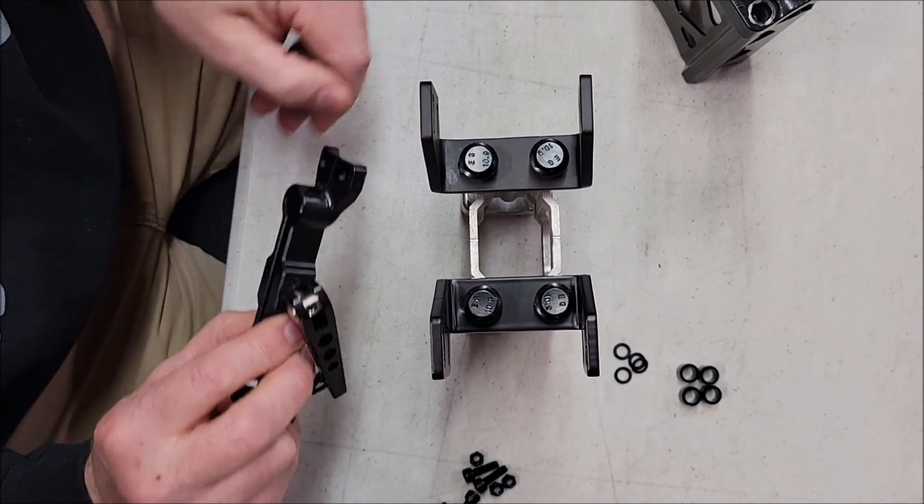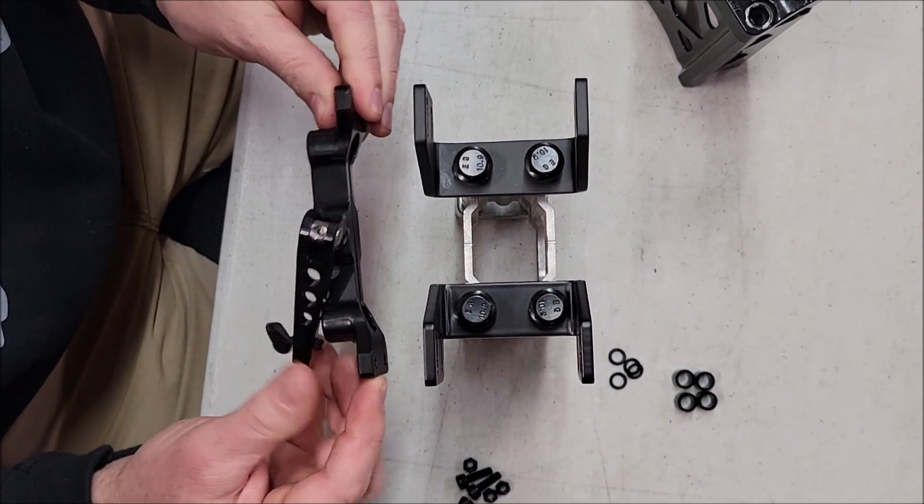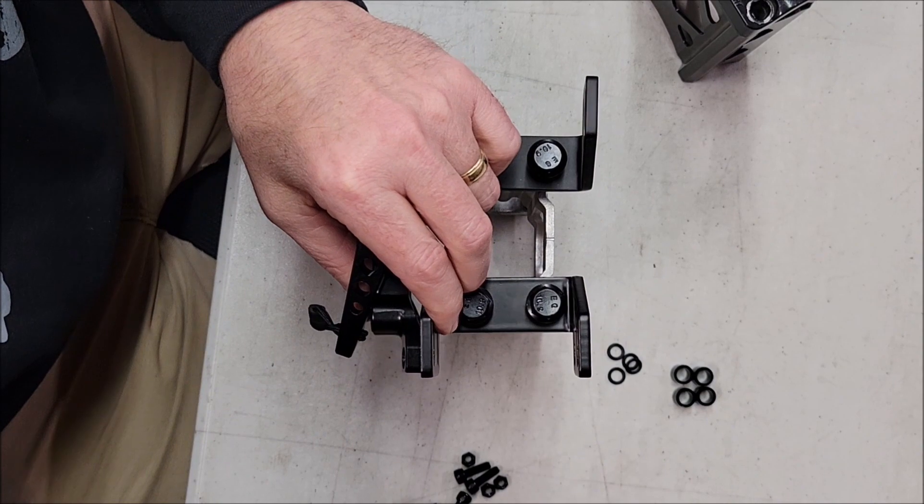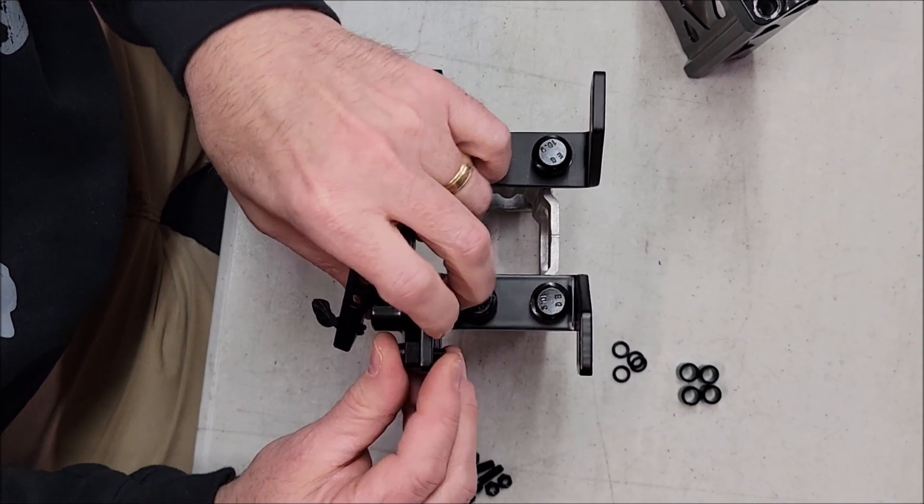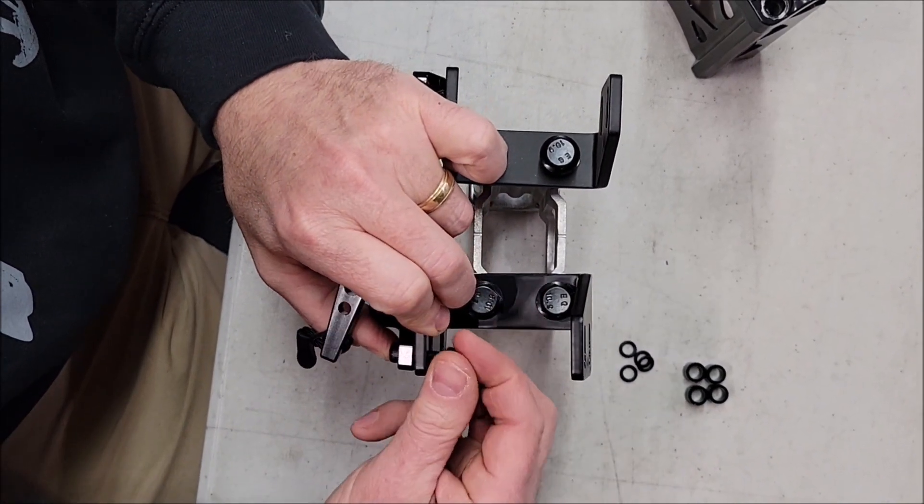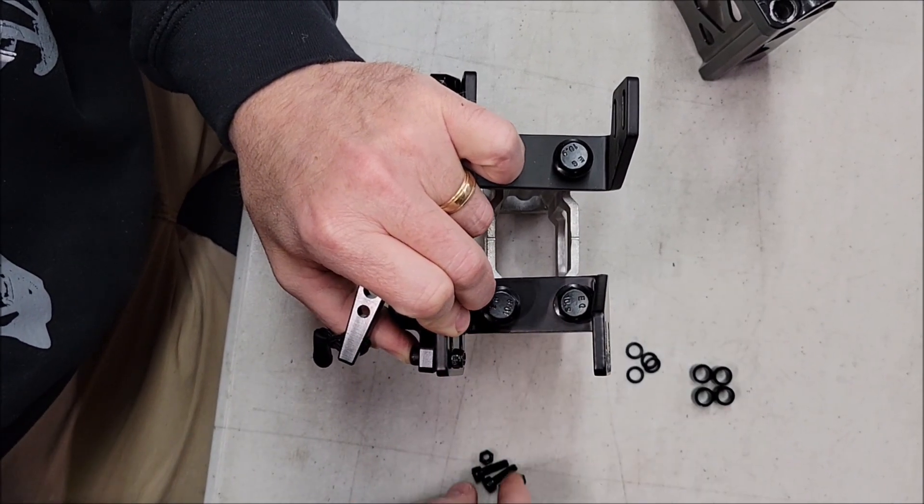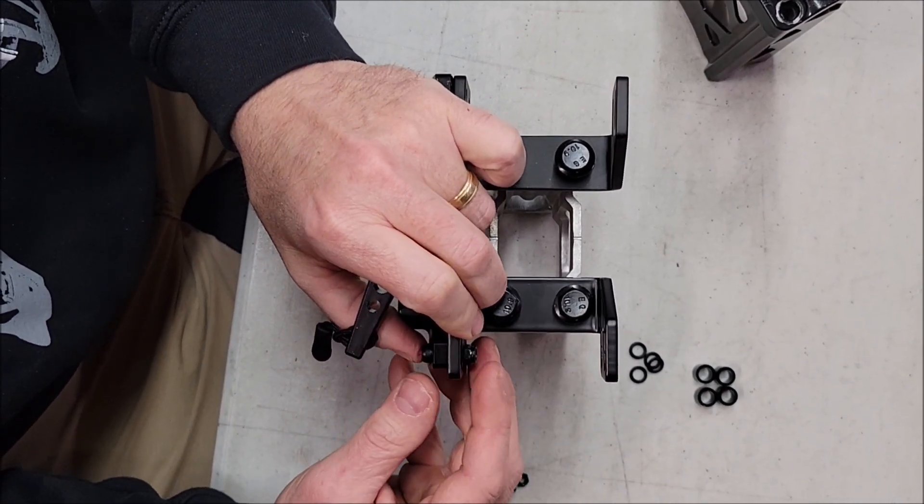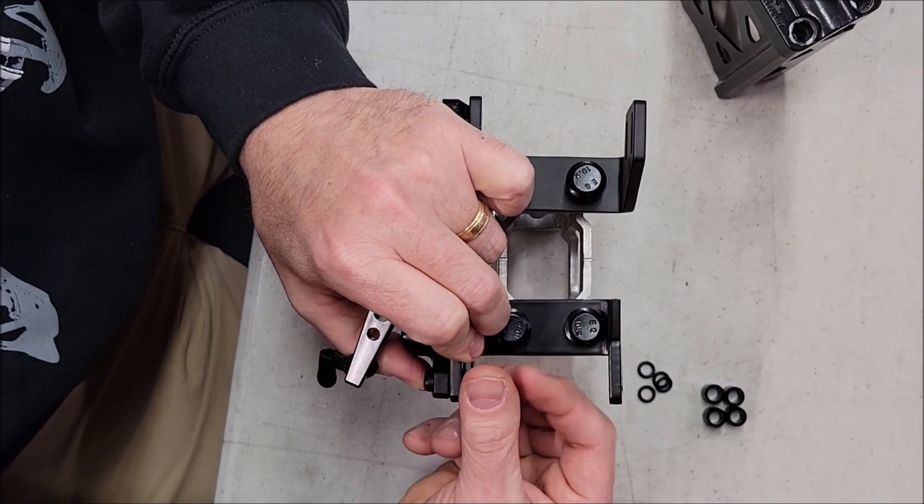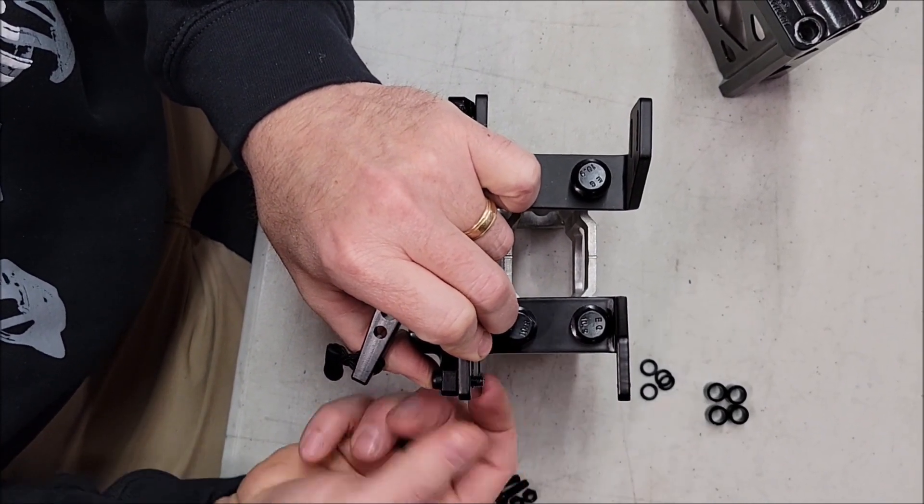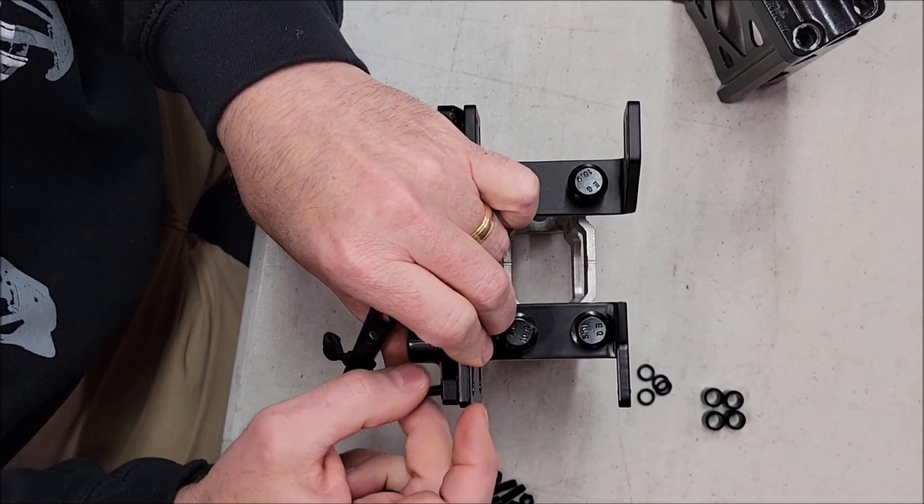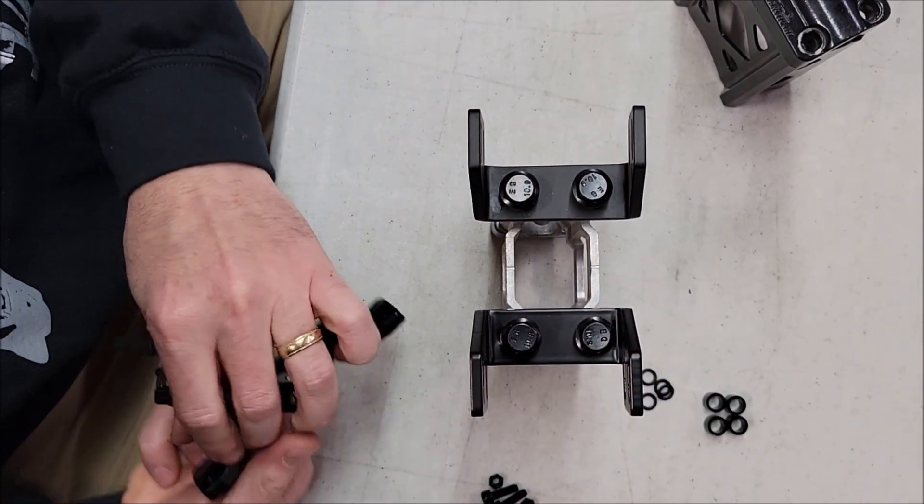You're going to take your actual clamping mechanism here and attach it using the hardware provided, like so. Everything's slotted so you can adjust everything. There's four of those that you're going to put onto the bracket. If you're running both bags on both sides, you'll do the same thing on that side that you do on this side.